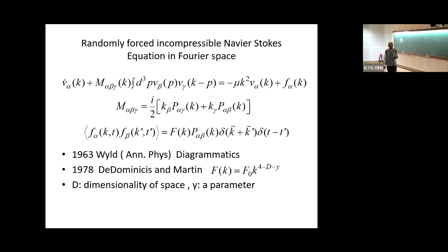In 1978, De Dominicis and Martin worked with a particular form for F(K): proportional to K to the power (4 minus D minus y), where D is the dimensionality of space and y is a parameter they introduced to make the calculation somewhat transparent and simpler.